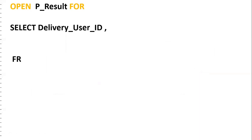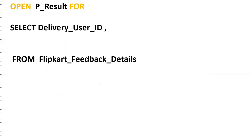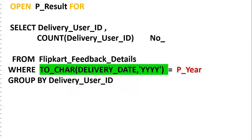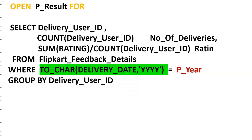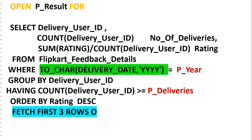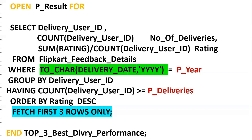Let me explain one more time. From the Flipkart feedback details table, we extract the year so we can filter for a particular year. We group by delivery user ID and compute number of deliveries and the sum of rating by count of deliveries. The HAVING clause filters records based on minimum number of deliveries — only records meeting that threshold are considered. We order by rating descending, and the 12c FETCH FIRST 3 ROWS ONLY feature fulfills our requirement of getting the top three best delivery performers.